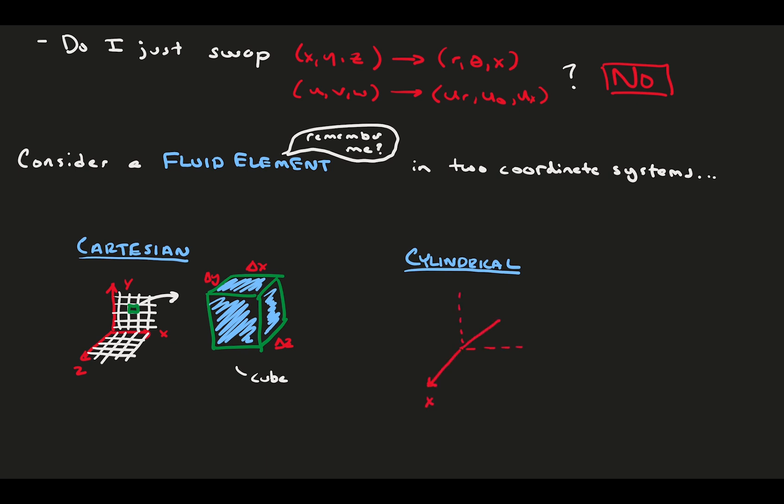In cylindrical, the fluid element takes on a different shape with two linear sides, delta x and delta r, and a third arc. On the bottom, the arc length is r delta theta, but on the top, it's r plus delta r delta theta.